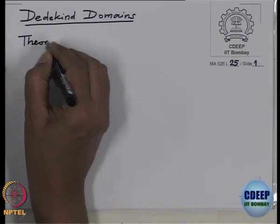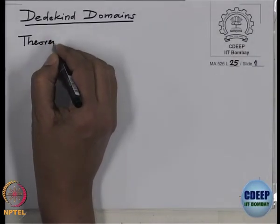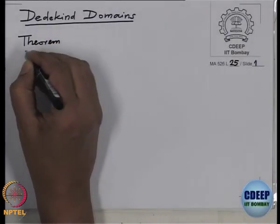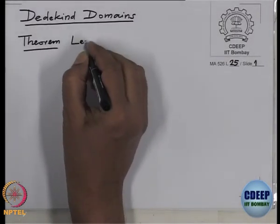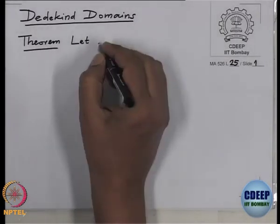Today is the last lecture, and we are left to prove two important characterizations of Noetherian Dedekind domains. So the first theorem — this is the theorem we stated last time but did not prove — so let A be an integral domain.